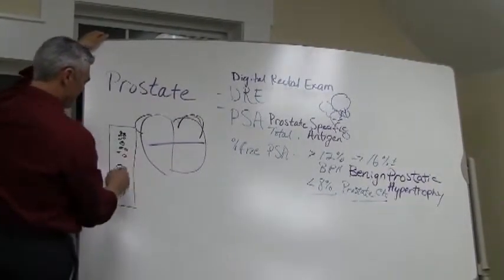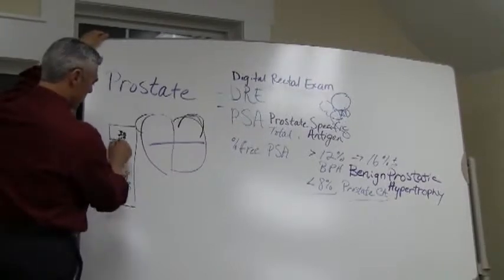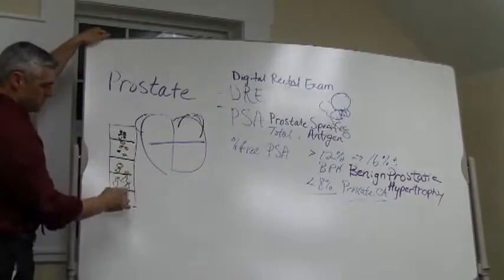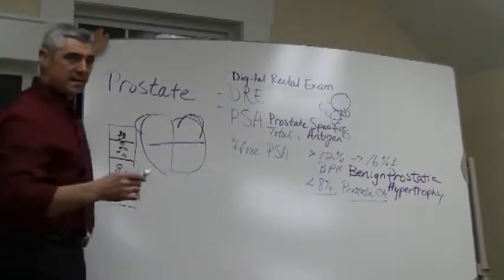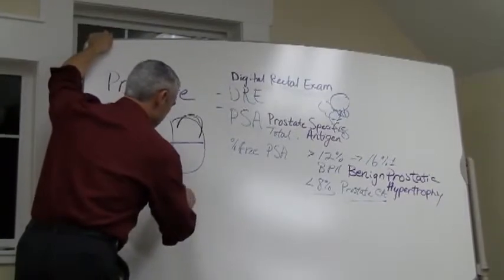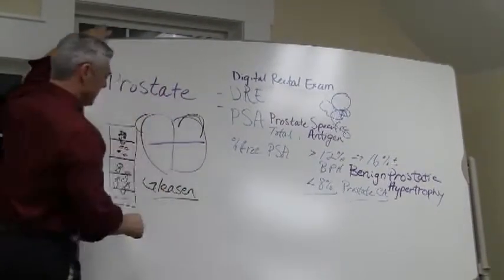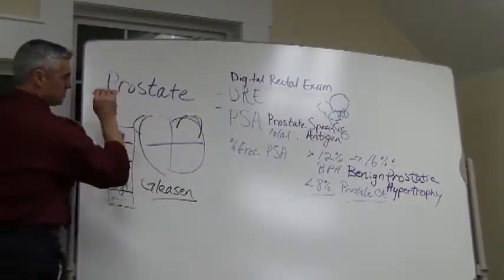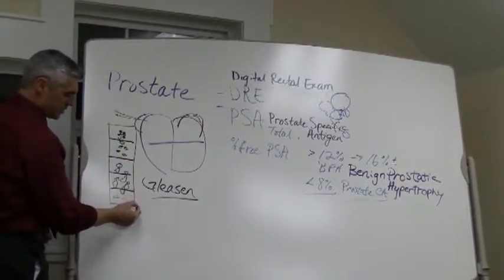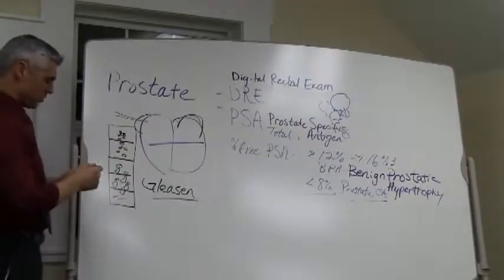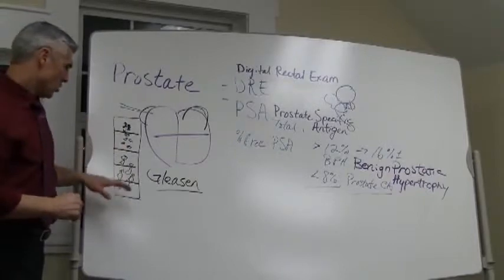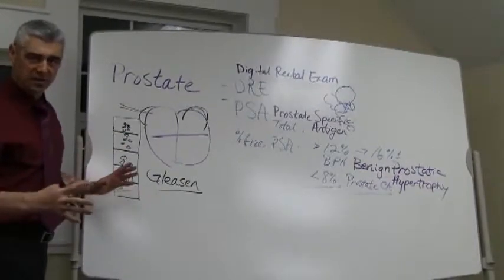We measure this as what we call a Gleason score. The Gleason score is where the doctor has biopsied the tissue and the physician looks underneath the microscope to determine whether the cells look healthy or very, very unhealthy.